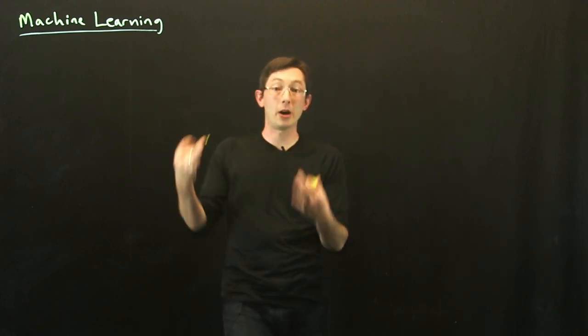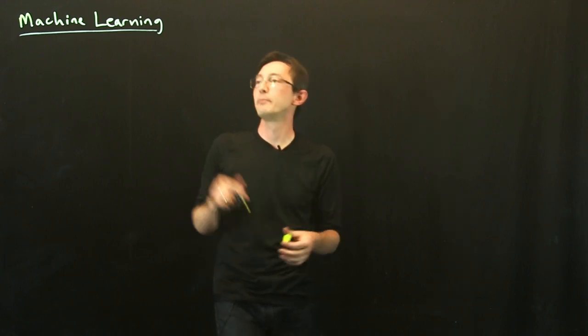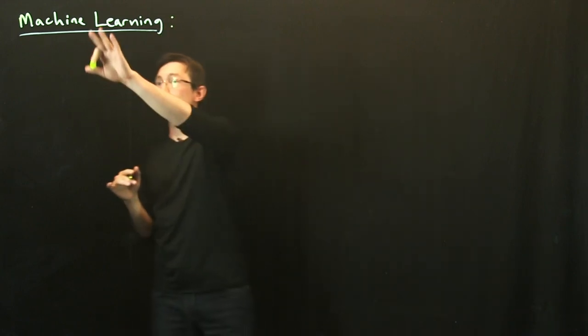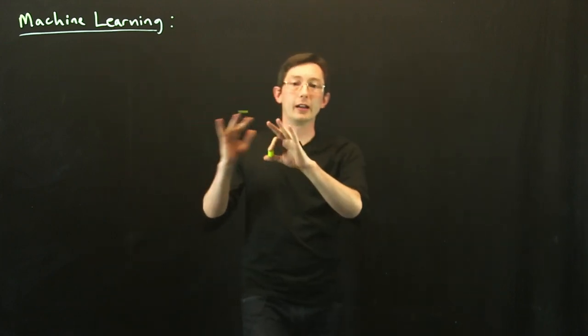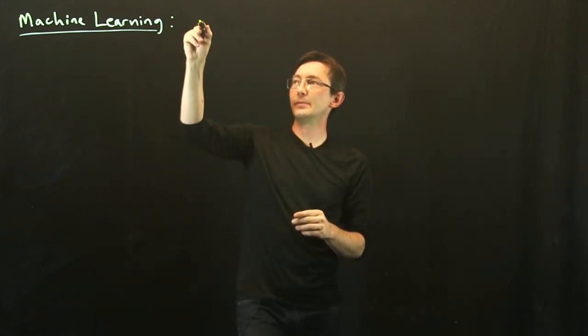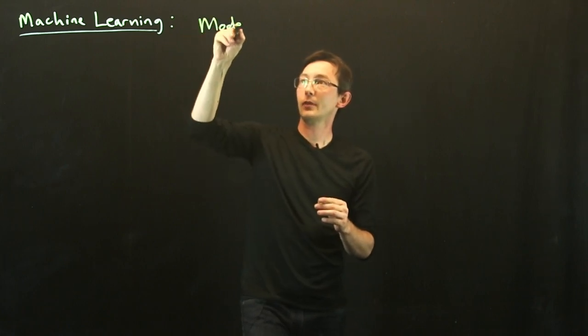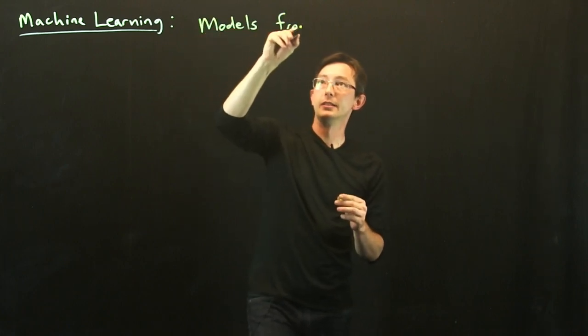And so now you're ready to build models, useful models from your data. And this is really where all of the magic happens. Machine learning in the real world in simple terms is building useful models from data.